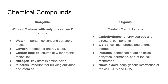When we talk about chemical compounds in this video, we're talking about two categories: inorganic and organic. Inorganic compounds are those without any carbon atoms, or they might contain only one or two carbon atoms. When we refer to organic compounds, they contain many carbon molecules and hydrogen atoms.